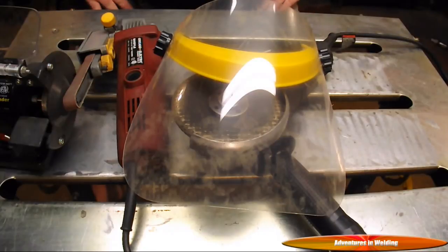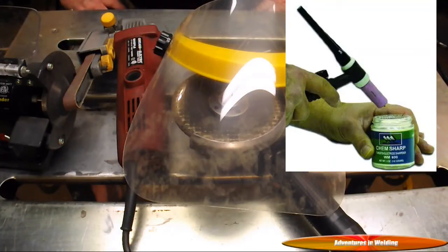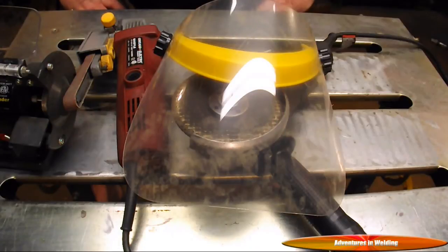Especially if you're grinding the thoriated tungsten, you might also want to throw on a dust mask or a respirator so that you're not inhaling any of that radioactive thorium. One final thing, there is a chemical sharpener called Chem Sharp where you get your electrode red hot, orange hot, really really hot, and you dip it in there. But I have never used it, so I cannot comment on it.